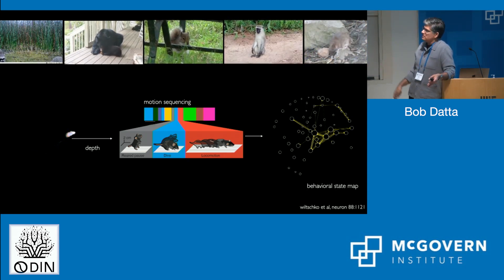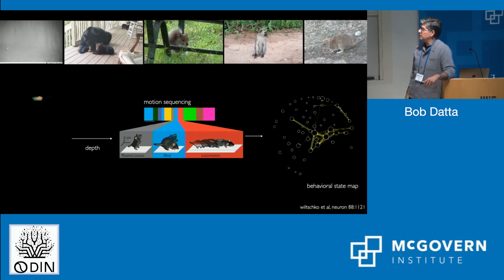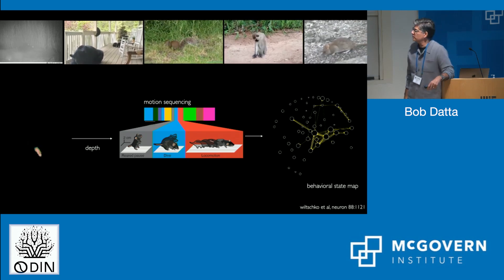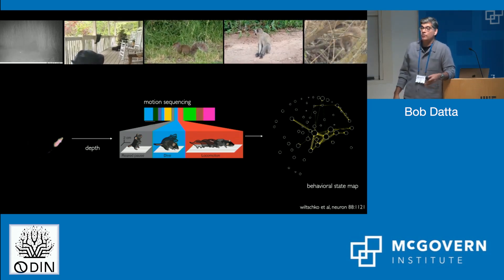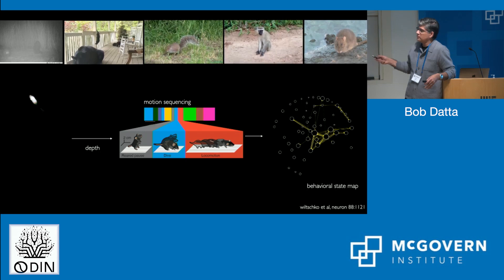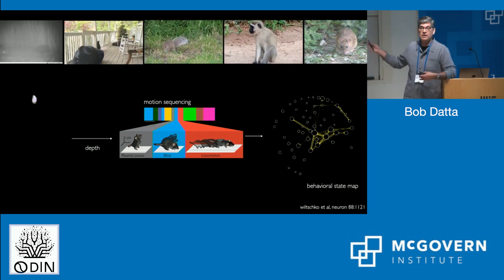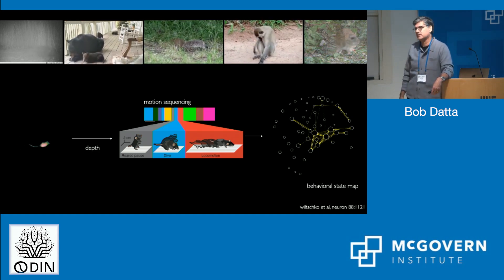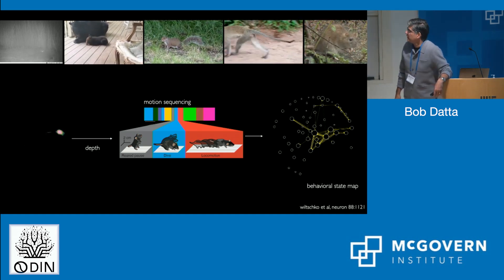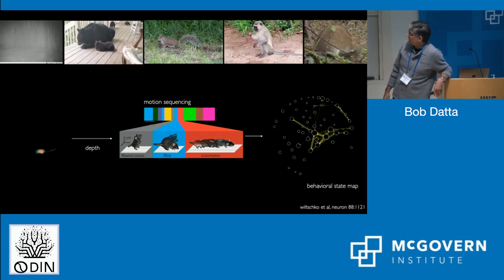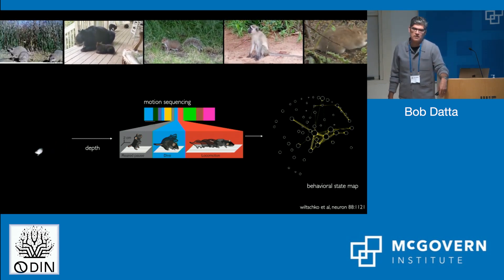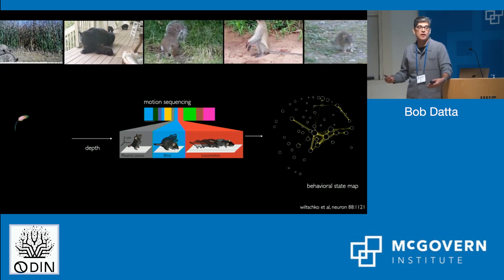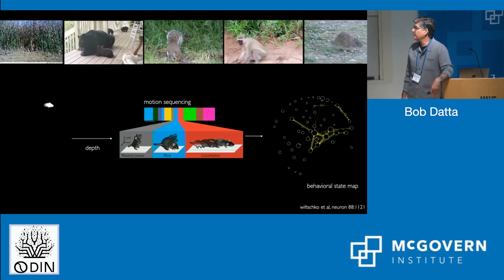Each node in our behavioral map is a behavioral syllable. Its diameter reflects how often that syllable is used in a particular experiment, and the yellow directional arrows capture the observed likelihood of transition over time from one to the other. These kinds of behavioral state maps do a really nice job of quantitatively encapsulating the overall behavioral comportment of any mouse in a given experiment, and that allows us to objectively think about how perturbations — genetic, optogenetic, and otherwise — might affect behavior.